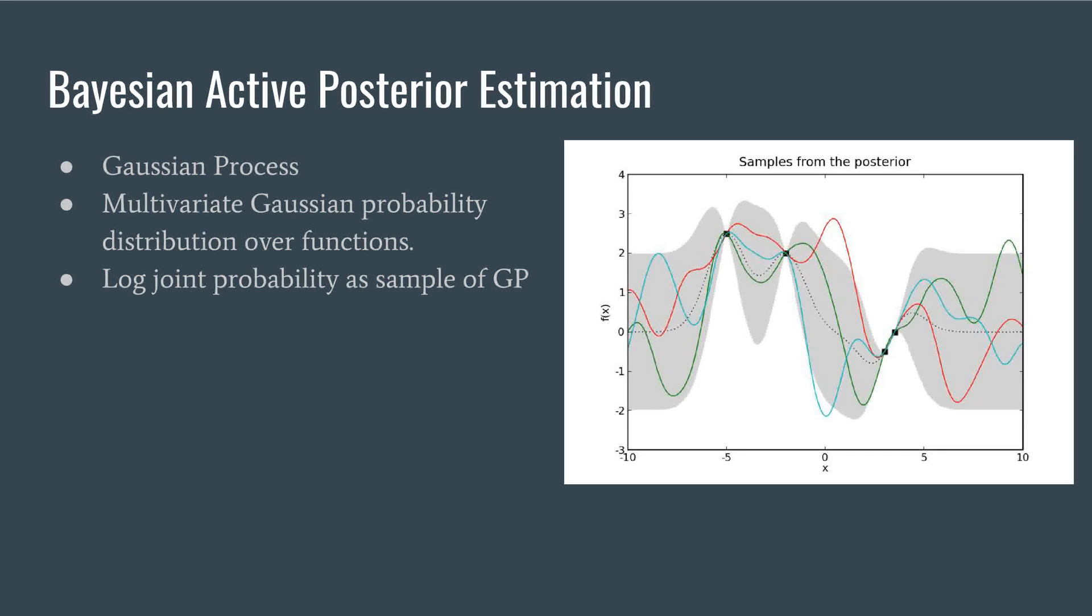Bayesian Active Posterior Estimation is based on the multivariate Gaussian probability distribution over function. In the diagram, data is shown as black squares, the colored lines are samples from the process, the black dotted line represents the mean of the process, and the gray shaded area covers twice the standard deviation at each input. In our case, a sample represents the log joint probability distribution of model parameters and observations.